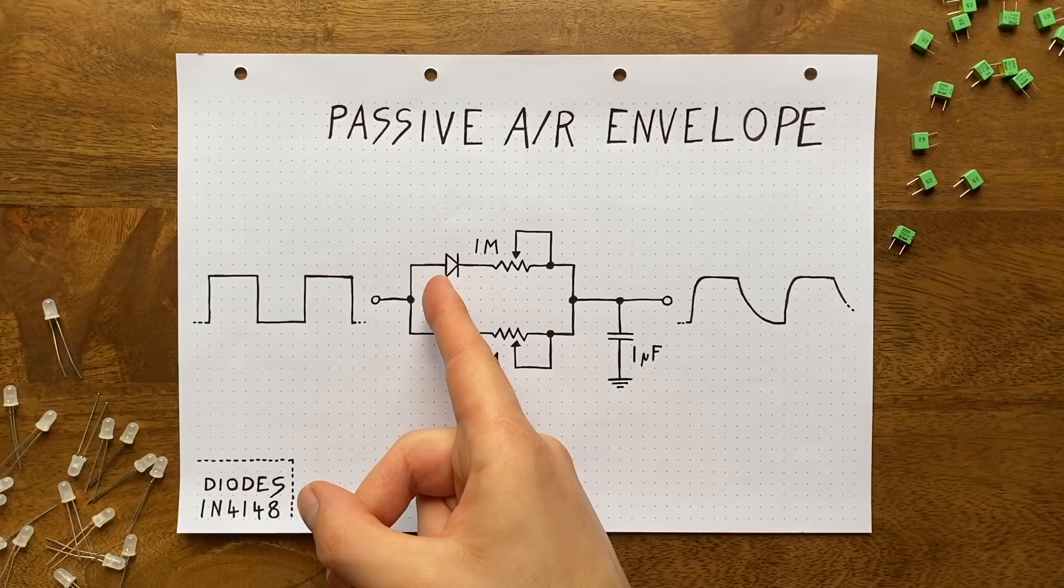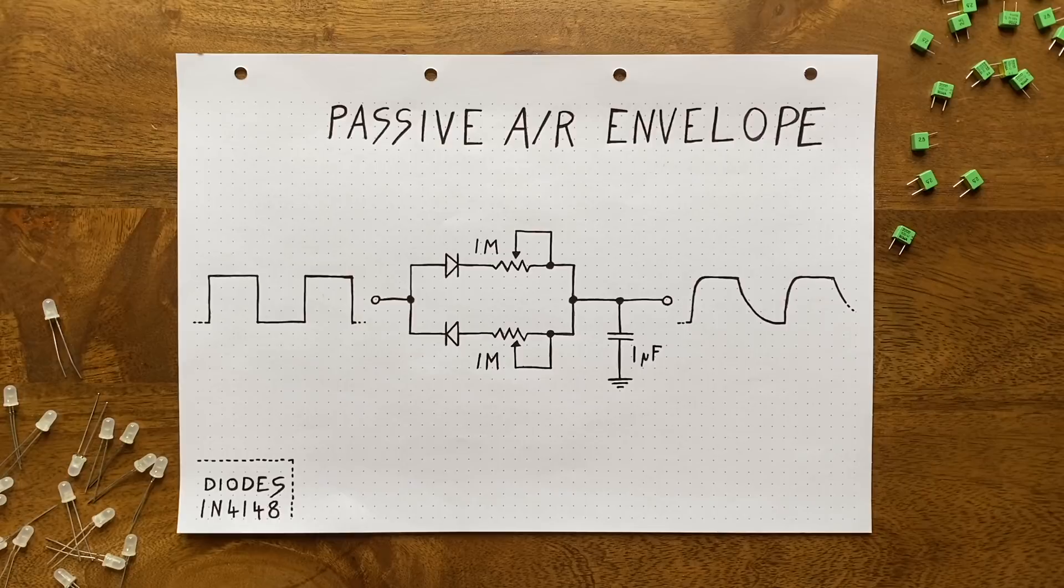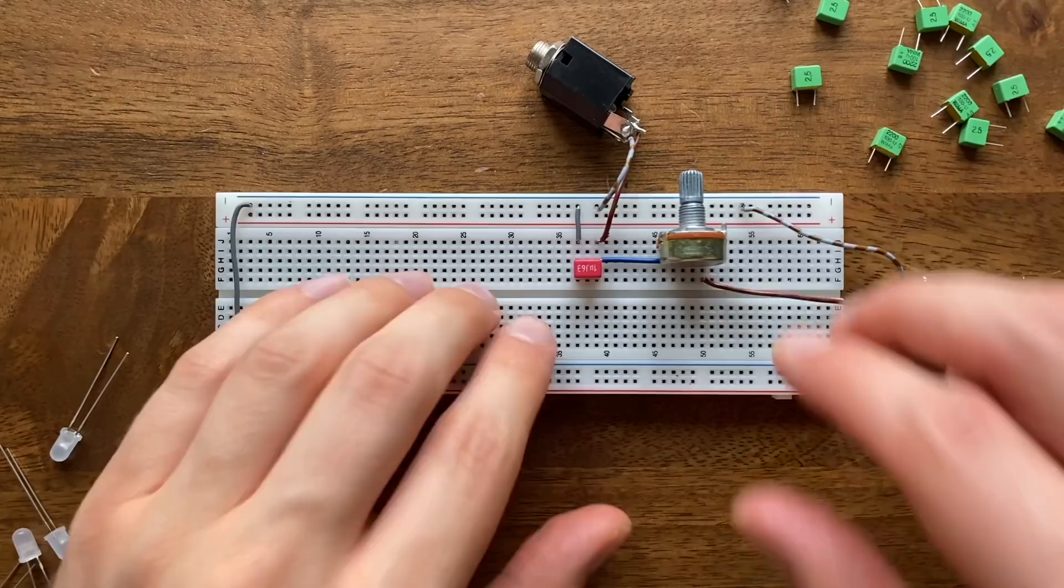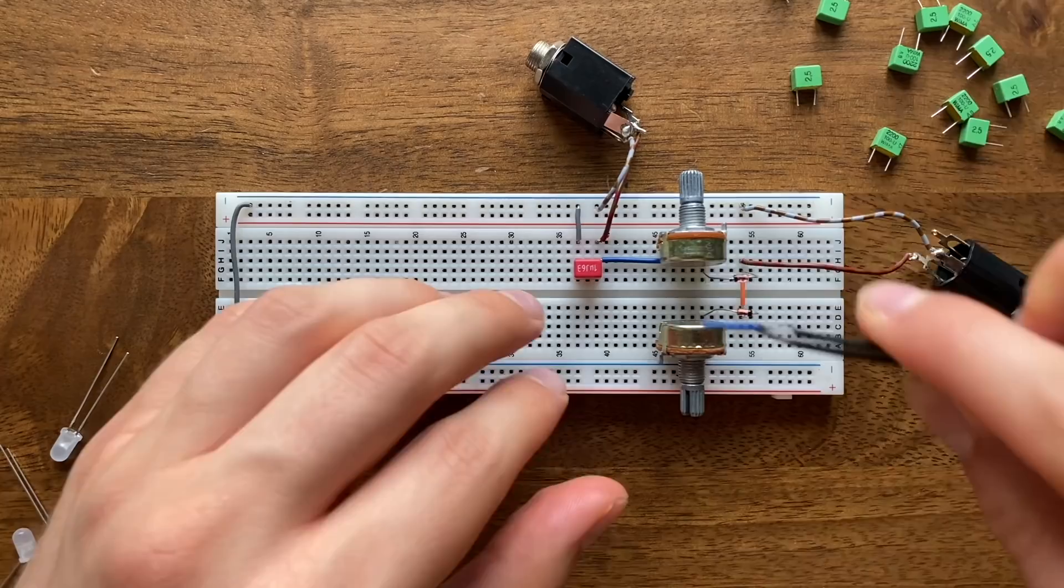Where before our capacitor was charged and discharged through the same resistor, now each phase gets their own. So when the input signal swings high, a current will flow through this diode and only this diode, through this resistor and into the capacitor. And during the low phase, the current will take this other path. This means that this potentiometer now controls the attack and this one controls the release. Cool, so let's give this a try. I'll set up the second pot over here, bring in our two diodes, and connect everything to the capacitor.